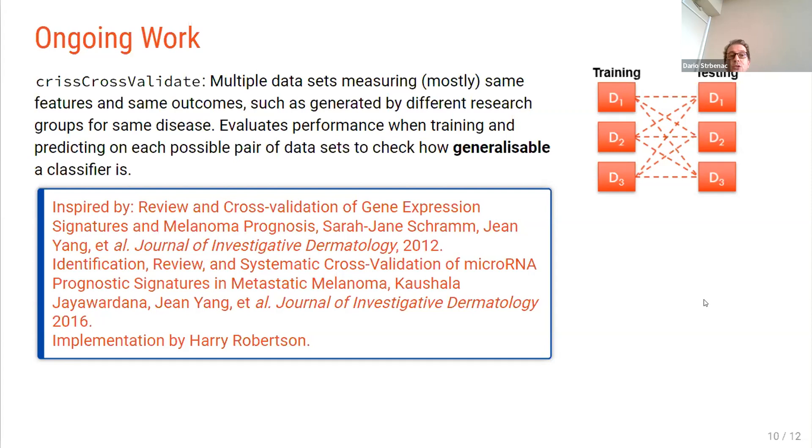So a couple of just mentions of ongoing work. So crisscrossValidate, this is where we have multiple data sets which are measuring the same features, and they also have the same set of outcomes. But they might be generated by different universities in different countries, for example. So to illustrate on the right side here, we might have three data sets that have completely different sets of samples, but with the same outcome. And we want to train and test on all possible combinations of those three data sets. So this is to evaluate the performance when you train on one data set and predict on another one to see how generalizable your classifier is. So if you develop your classifier on a data set from an American university, you want to check that it works on a similar data set from an Australian university to see whether your predictions are generalizable across countries.